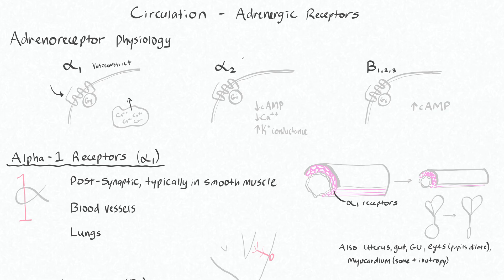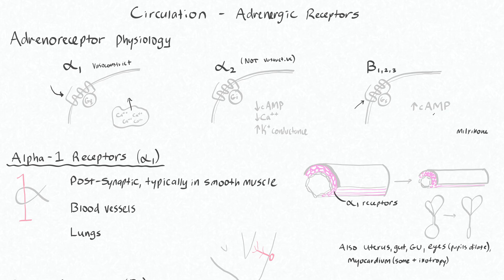Alpha-2 receptors I don't want to say much about because they are not vasoactive. For beta receptors, the end result of an agonist binding is that you have increased intracellular cyclic AMP. I wanted to point this out because we do use a medication called milrinone, which is an inodilator that works basically like a beta agonist, but it bypasses this receptor by directly increasing your intracellular cyclic AMP.